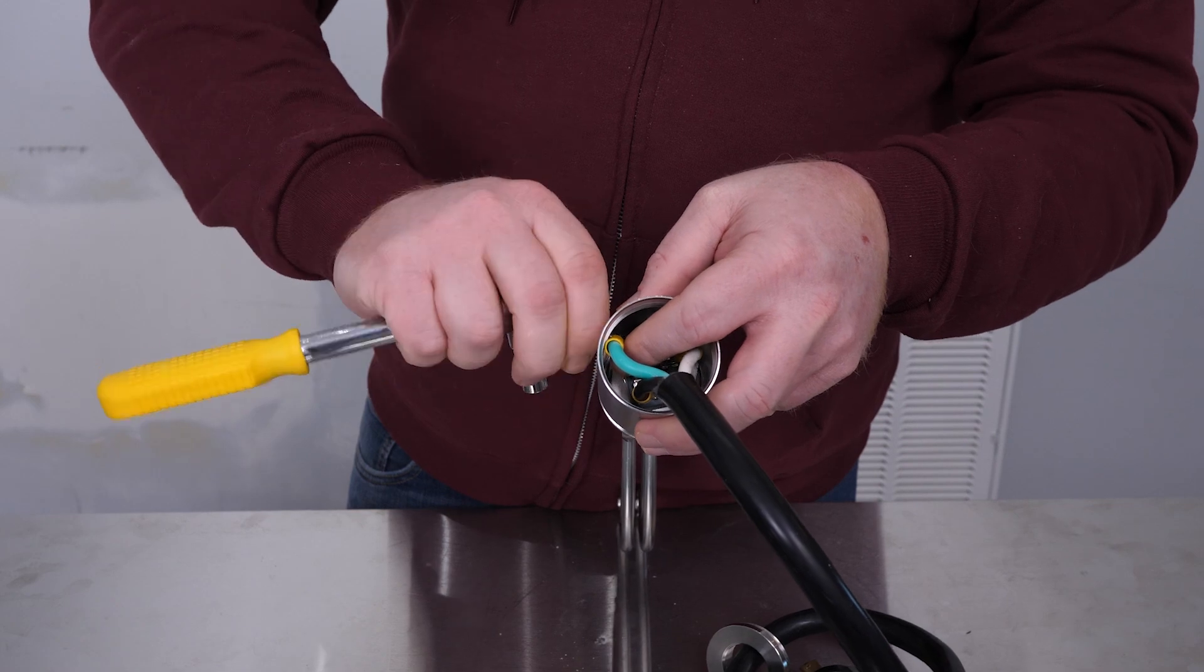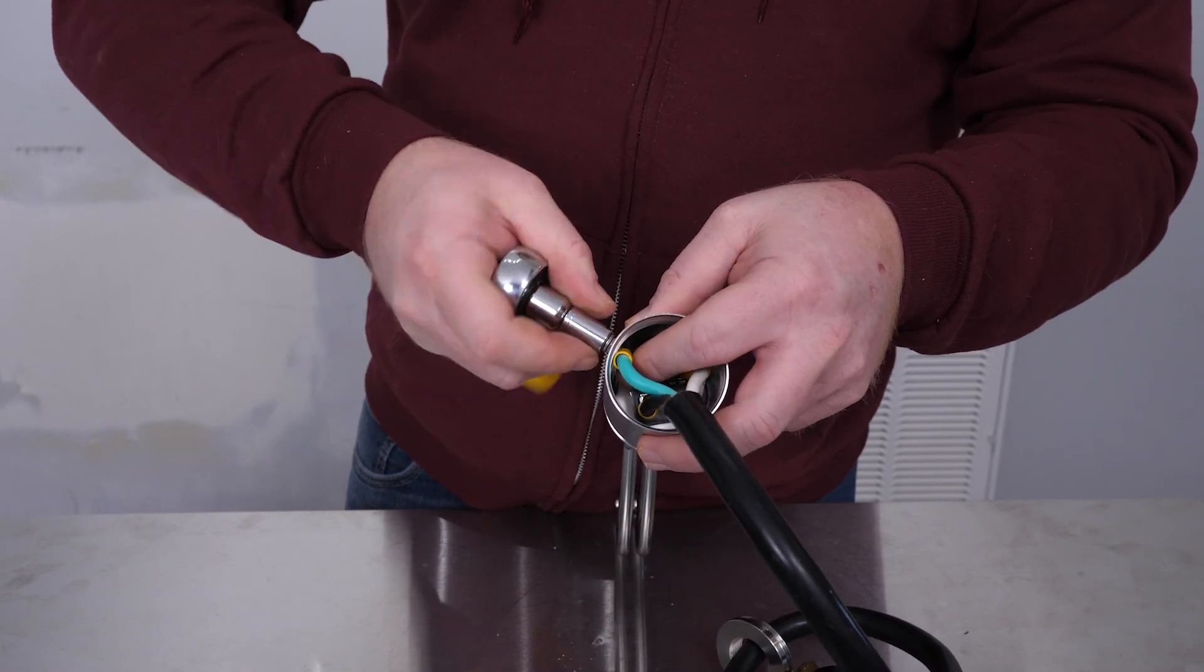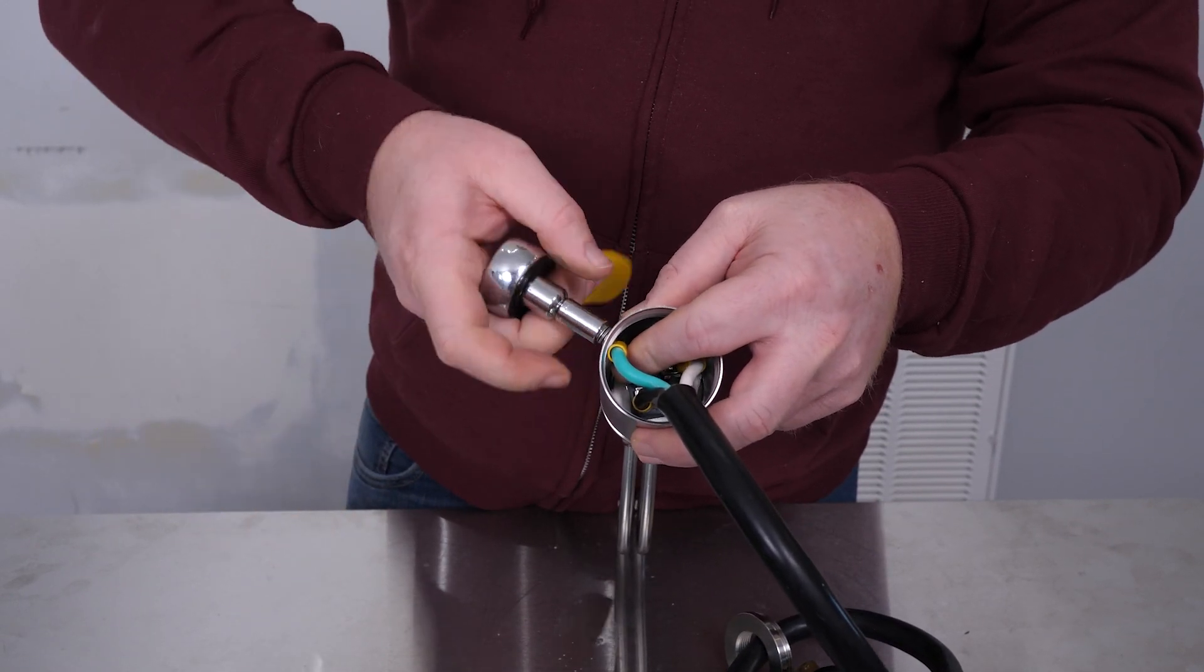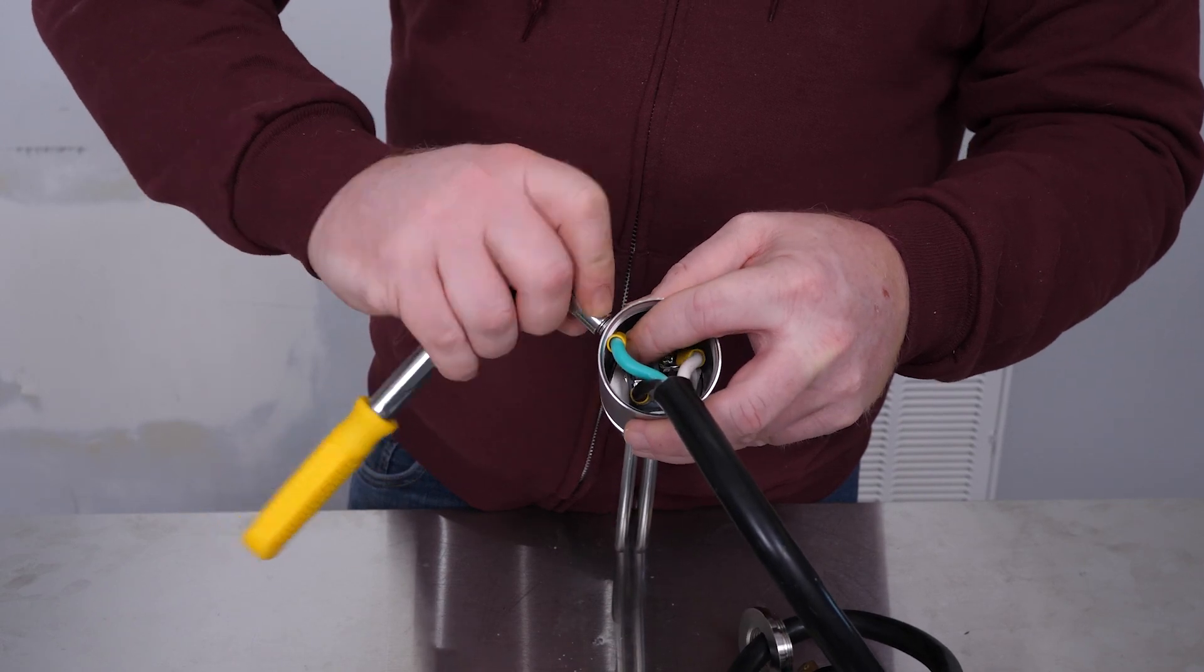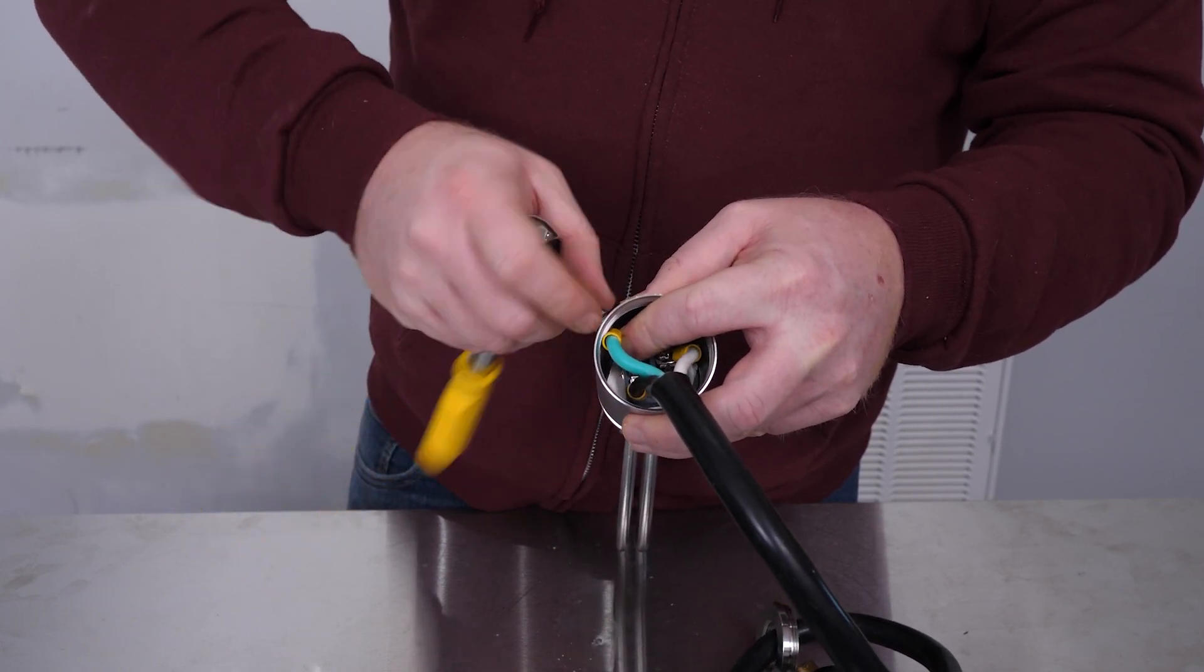Use a 7 millimeter socket to tighten it. You can tighten it by hand, then just tighten it up a little bit with the socket. You don't have to go crazy on it, just make it nice and snug.